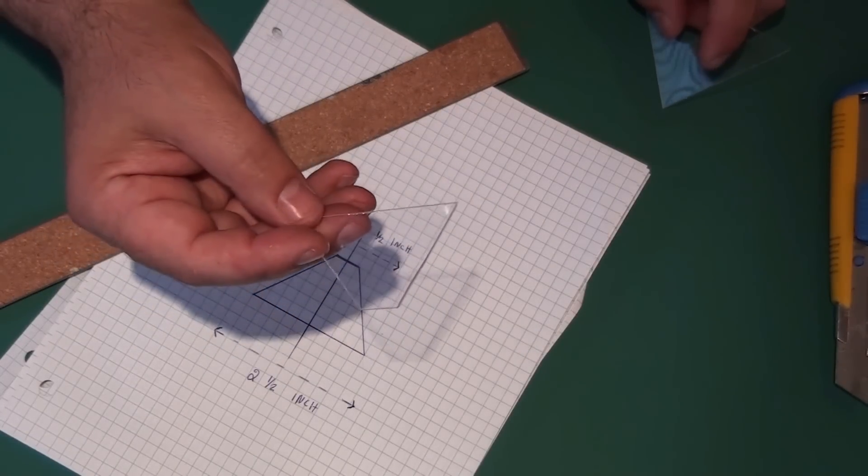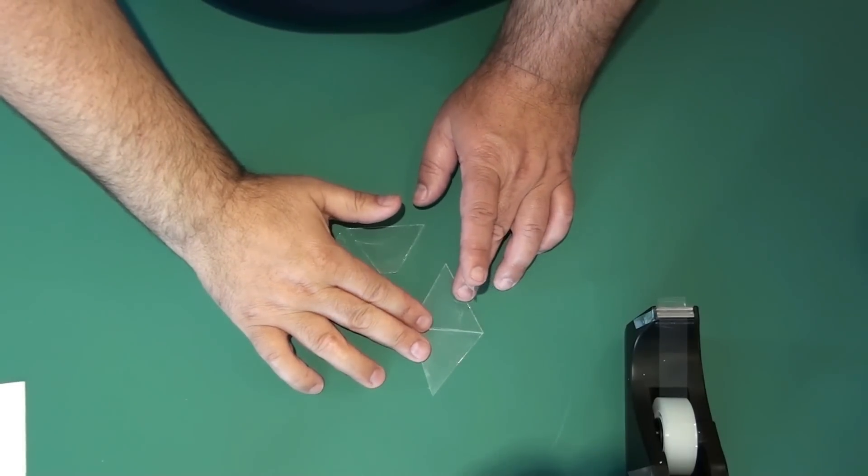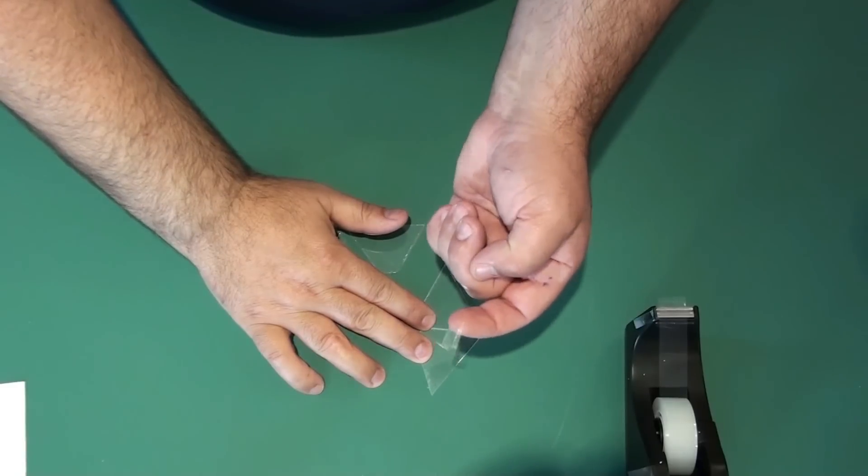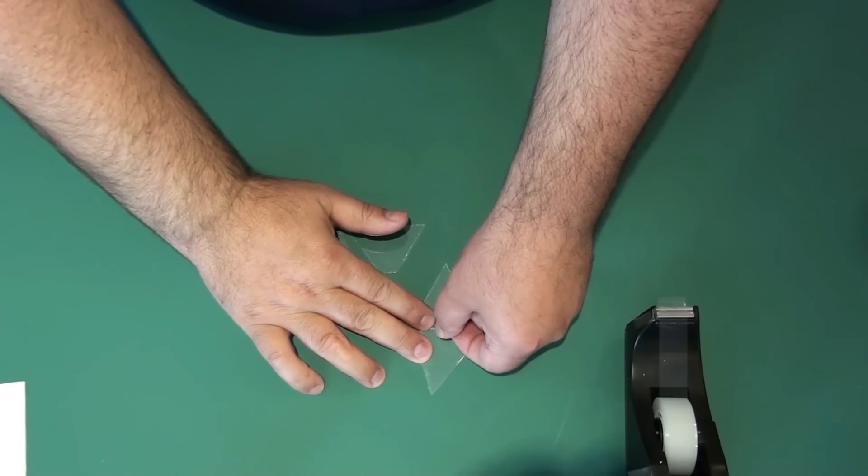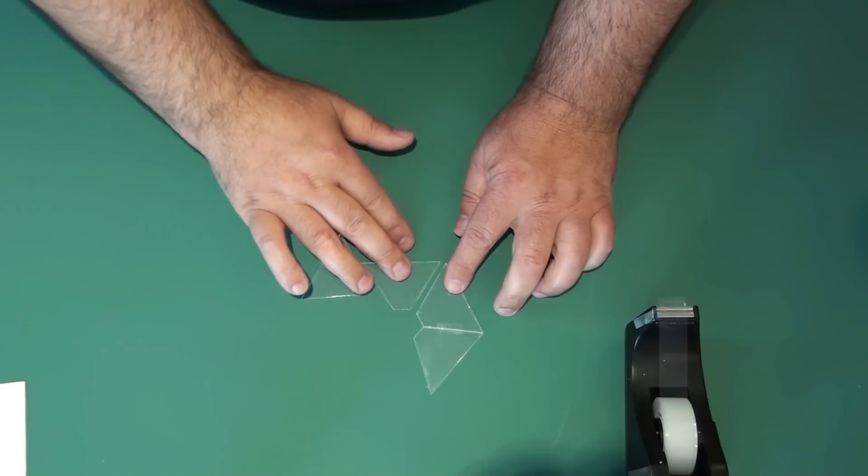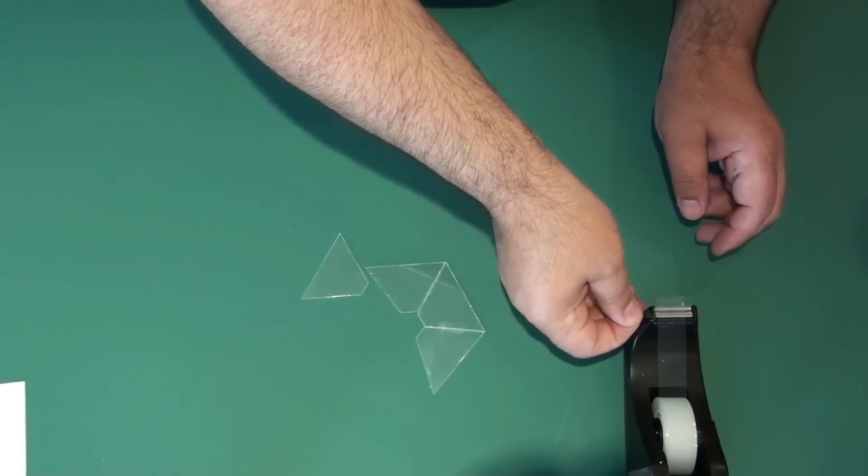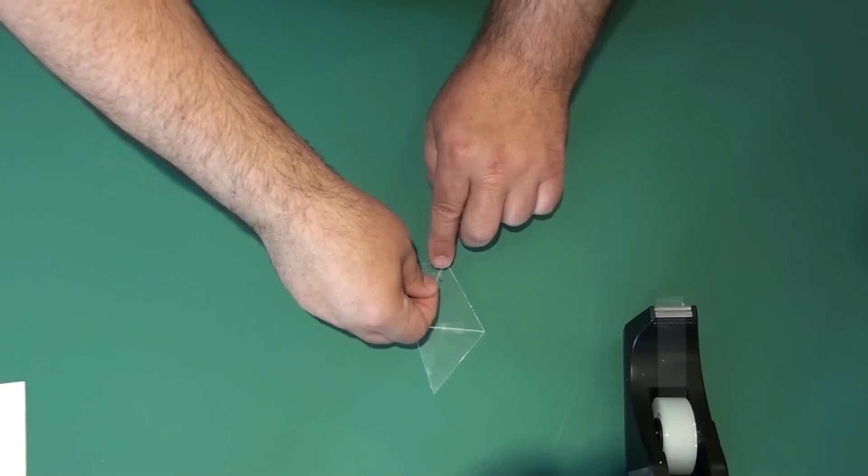And that's it. Now what's left to do is to put it all together. So we're going to use the ultra transparent scotch tape. It's pretty simple actually. Just put them together like this.